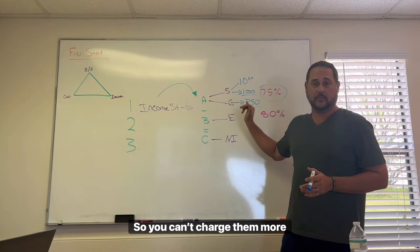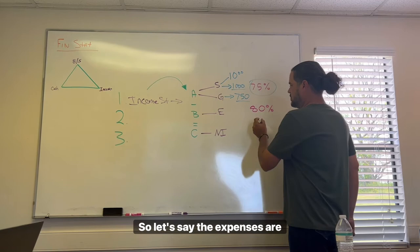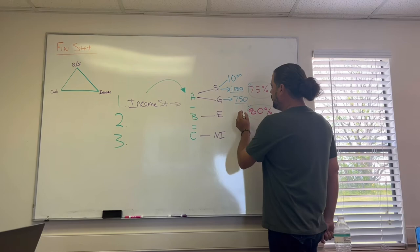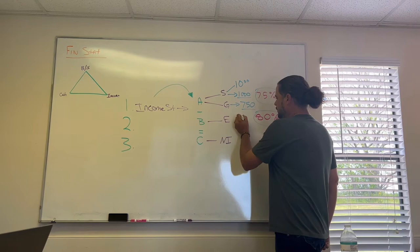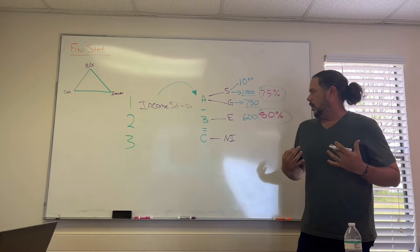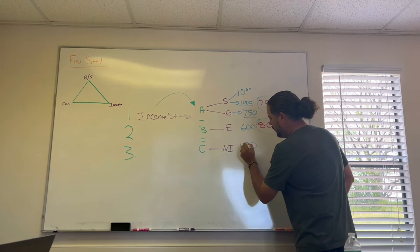So let's say the expenses are usually 80% of your gross. So what's 80% of $750? Probably $600, if I can guess. Somebody can check me. I'm pretty confident on that though. So if your expenses are $600, you're left making $150 on $1,000 of sales. Everybody's with me, right?